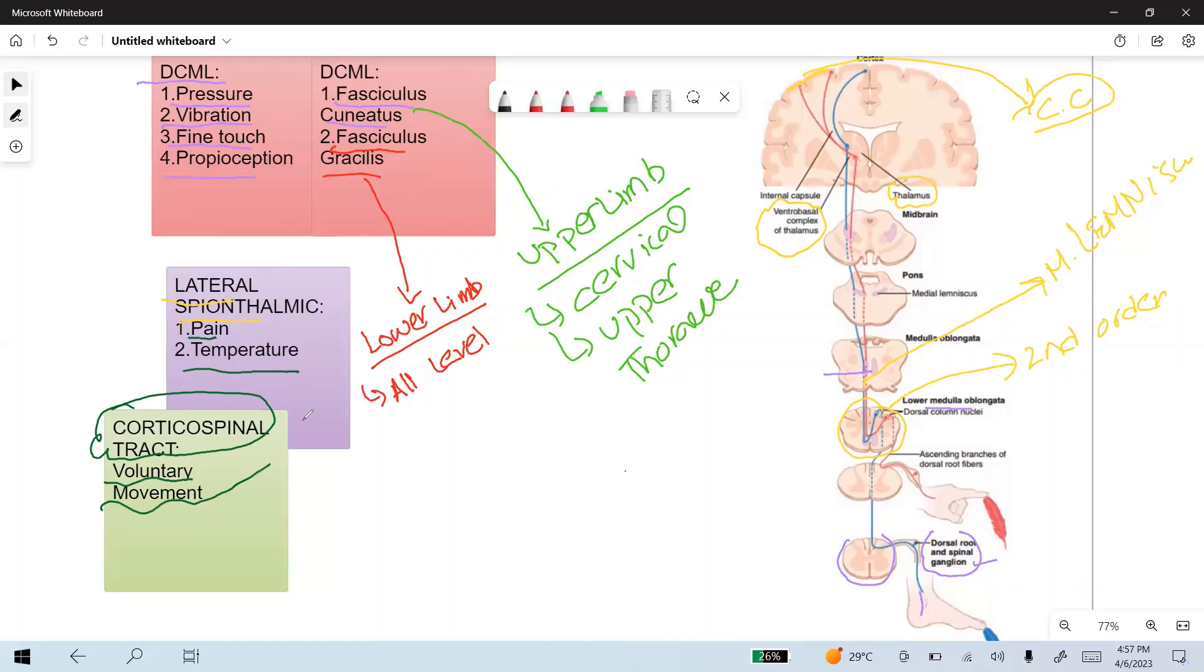One important thing: thalamus carries the third-order neuron cell bodies. From the fiber from the thalamus, the sensory information from the thalamus goes to the cerebral cortex in the primary sensory area that is present in the post-central gyrus.